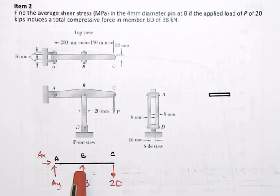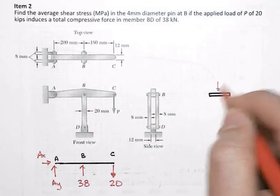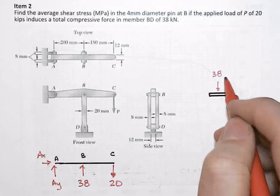So when we go and draw the free body diagram of the pin over here, then we've got 38 kilonewtons coming down from ABC onto the pin.